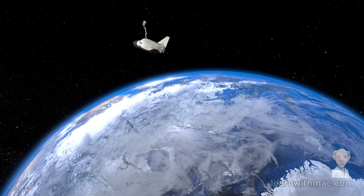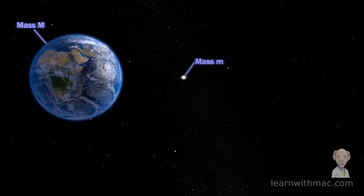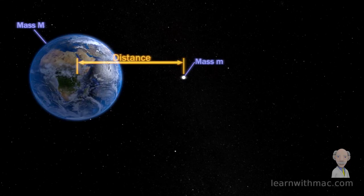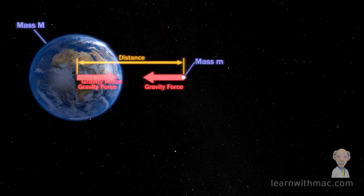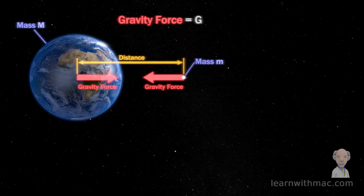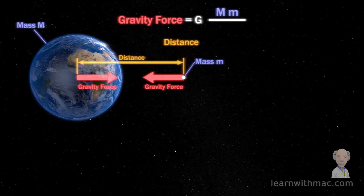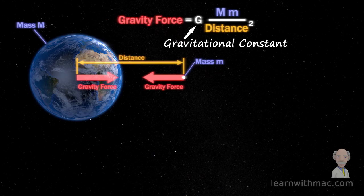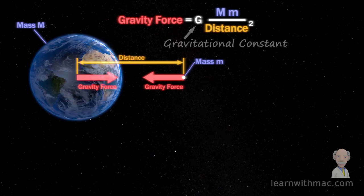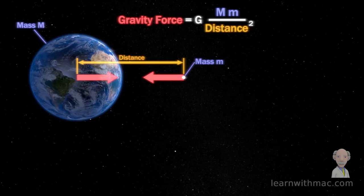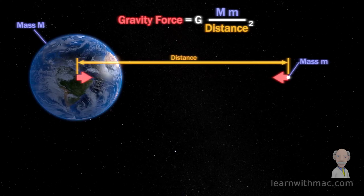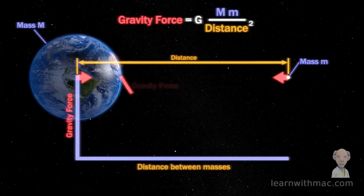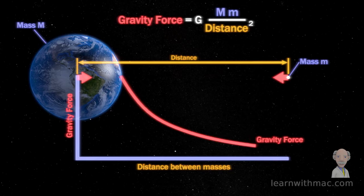One way to answer this is to calculate the size of the gravity force up here in space, and we can use Newton's Law of Universal Gravitation to do just that. Here we have two masses — one is the Earth, and the other a smaller object. They are separated by a distance, and there is an attractive gravitational force between them. Newton's Law states that the gravitational force between the two masses is equal to a constant times the product of their masses divided by the square of the distance between them. The constant G is known as the gravitational constant. An important observation is that the force of gravity between the two objects rapidly decreases as the distance between them increases — it is known as an inverse square law. The graph shows the rapid reduction in gravitational force as the distance between the two masses increases.